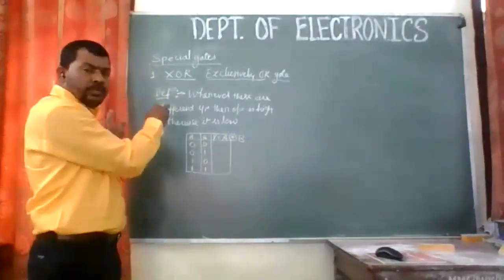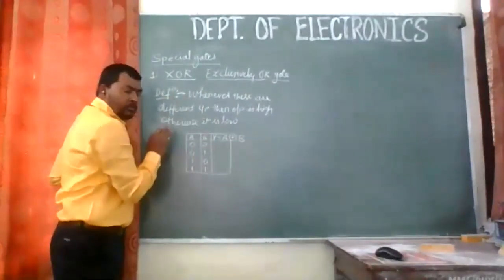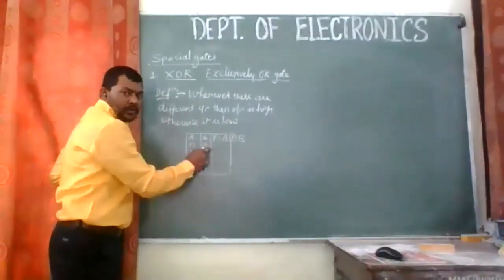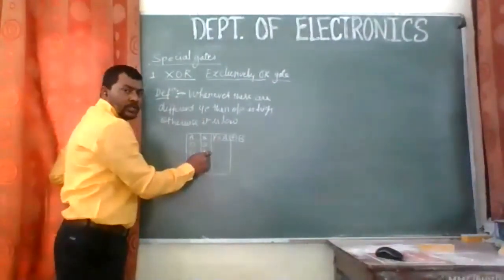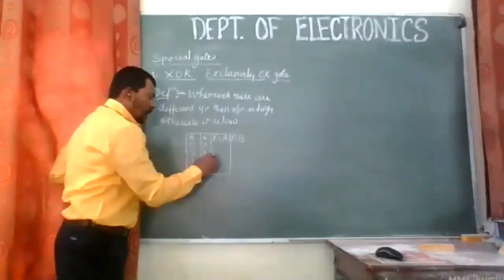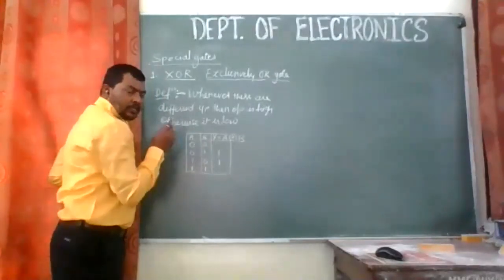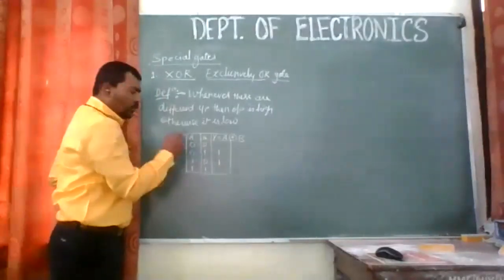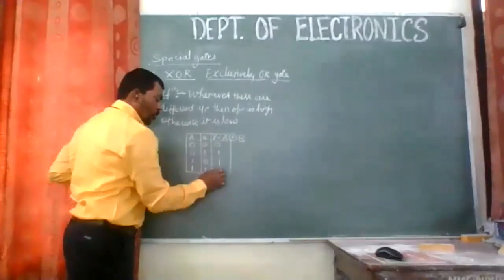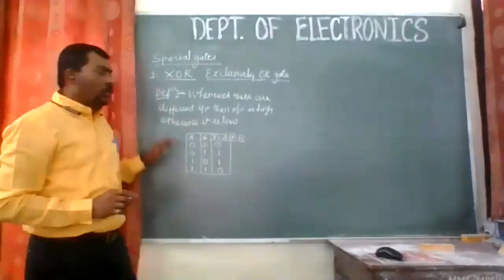As the definition says, for different inputs — meaning when both inputs are different, one is 0 and the other is 1 — only then the output is supposed to be 1. Otherwise it is 0. For same inputs, the output is 0 or low.